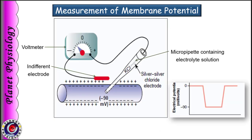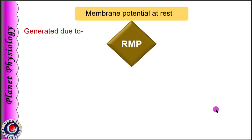Now, let's quickly study how membrane potential is recorded. Microelectrodes are connected to a very sensitive and sophisticated voltmeter. One microelectrode called the indifferent electrode is placed on the surface of the cell. The other, the recording electrode, is created by placing a silver-silver chloride electrode within a micro pipette containing potassium chloride solution. When the recording electrode is on the surface, it does not record any potential, as indicated by the zero potential line. But as soon as it is inserted within the cell, it records a steady potential of –90 mV as long as it remains inside, as indicated by the –90 line. Once taken out, it records zero potential again.